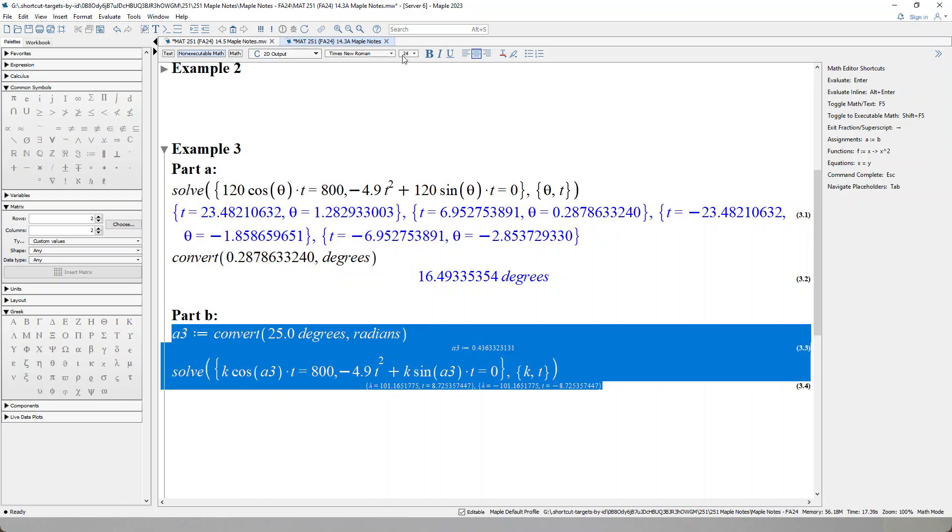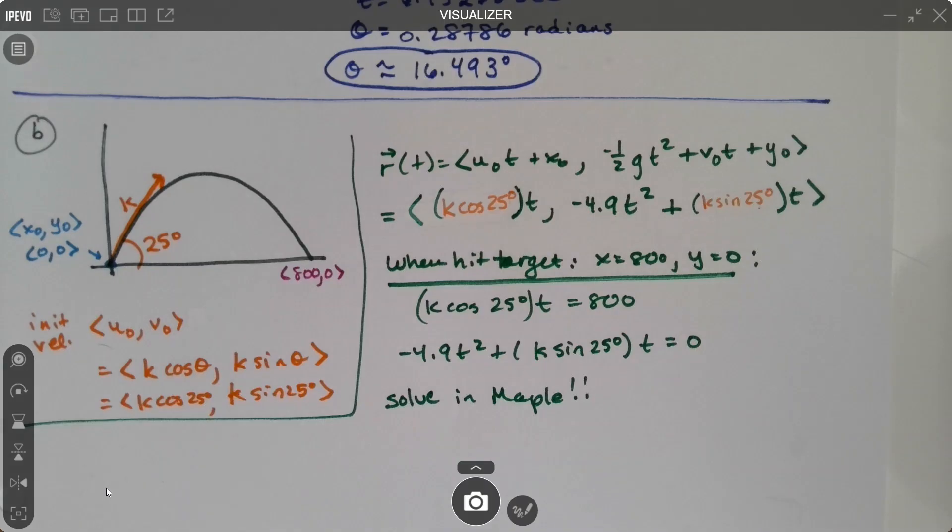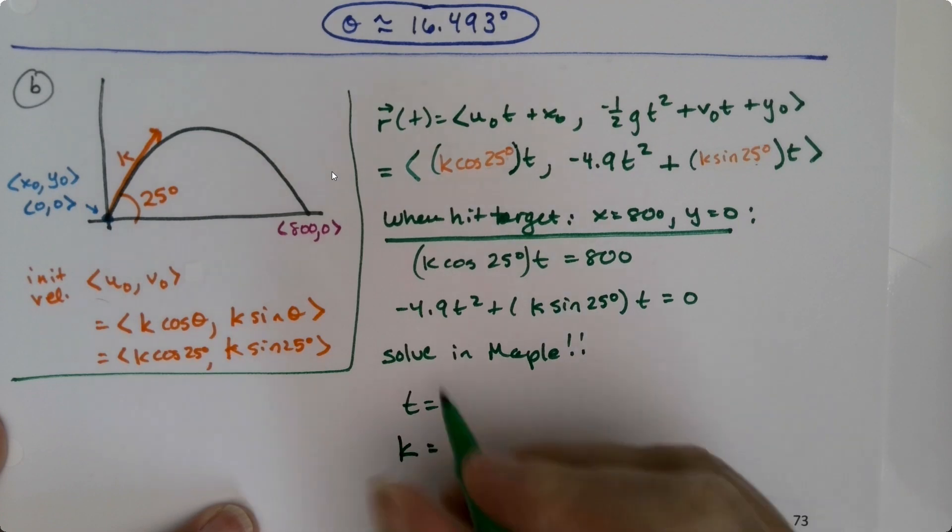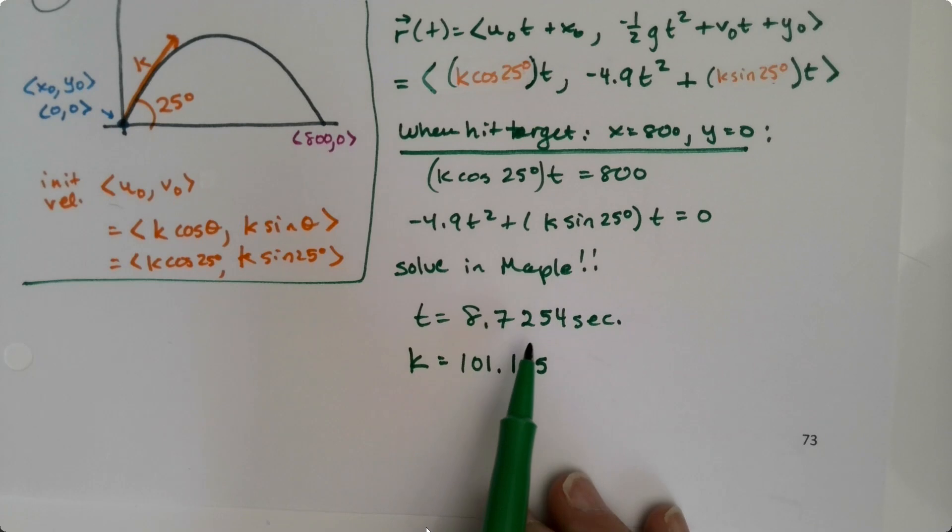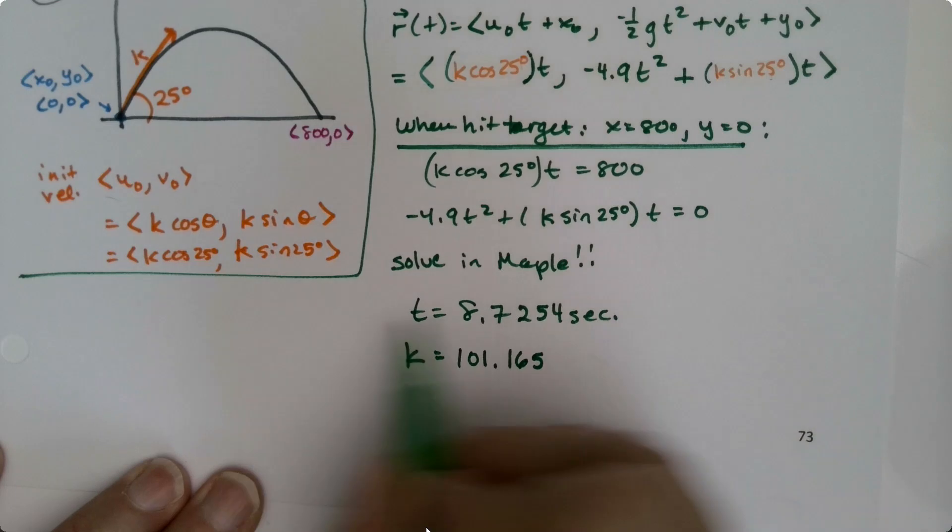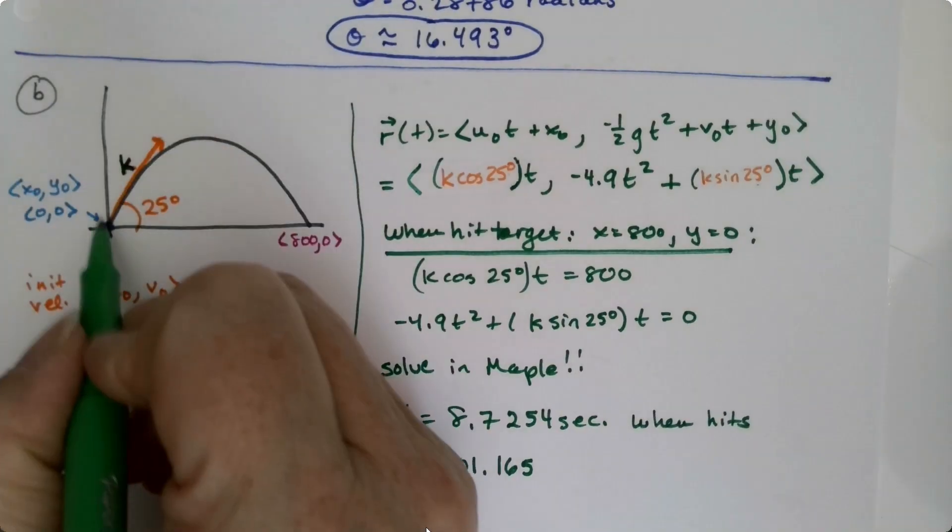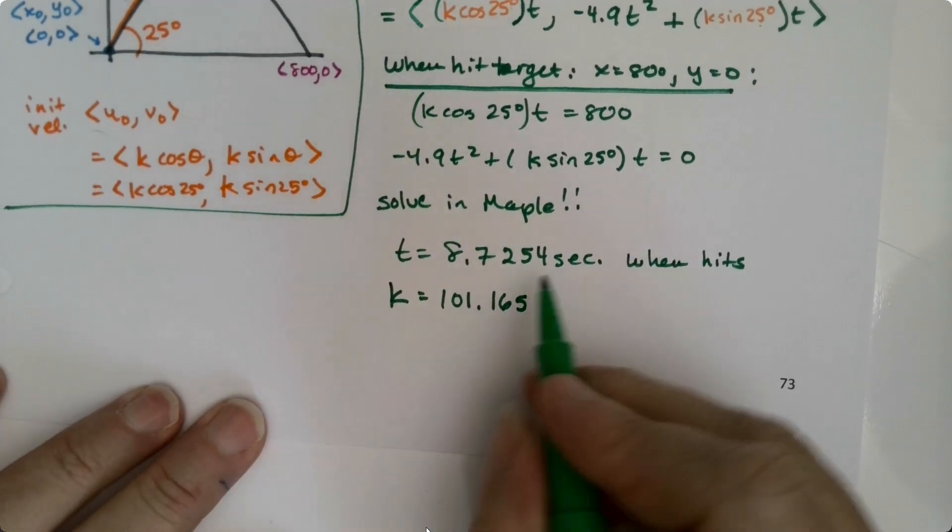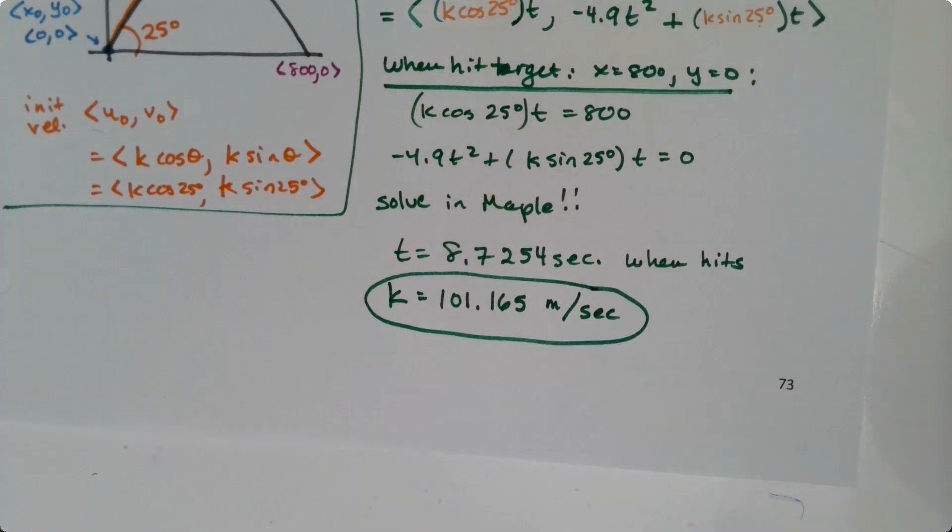So 8.7 seconds for your time. So K is 101.165. And I'm going to tell you right now that that's a lot easier to do in Maple than it is to do by hand. It's a real non-fun problem to do it by hand. So 8.7254 seconds is when it hits. So this is when it hits. Not that it asked, but in case it did. And then what is this K that we're finding? Well, the K that we're finding is the magnitude of the initial velocity vector, which is what it was asking for. It wants to know the speed, and that's what we found. Now, speed would be measured in the same units as velocity. In this case, it'd be meters per second. And we're done.